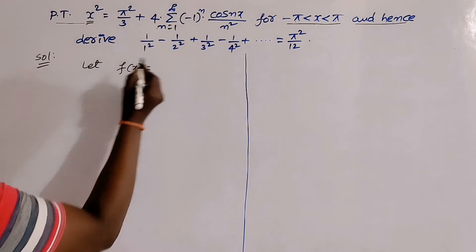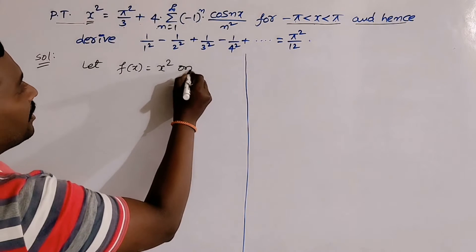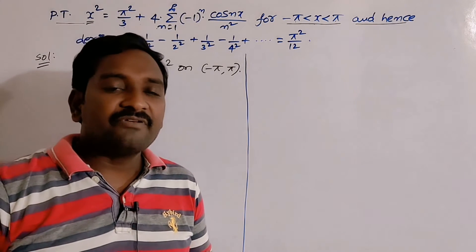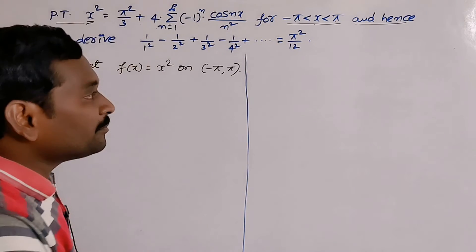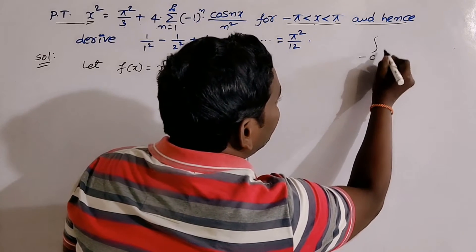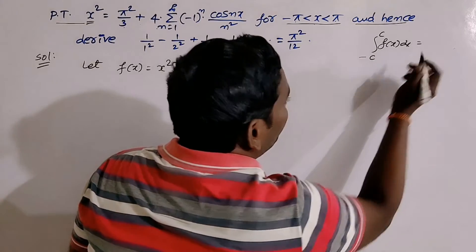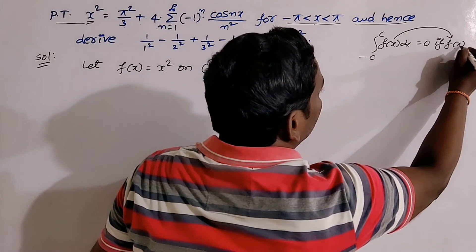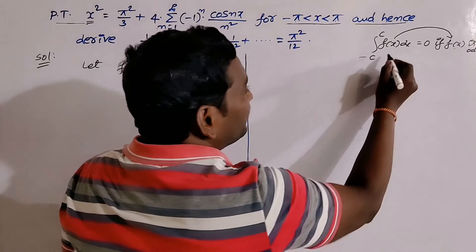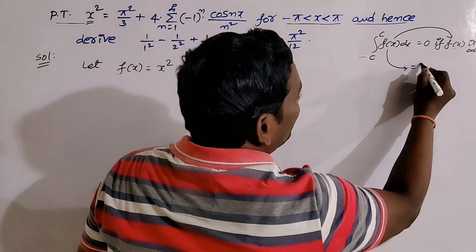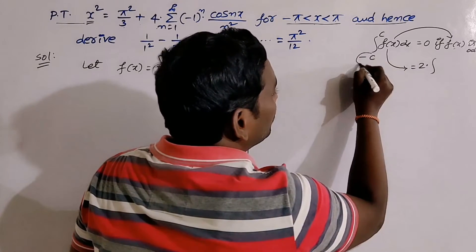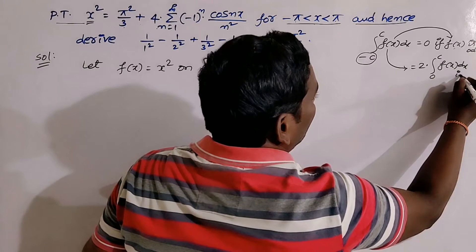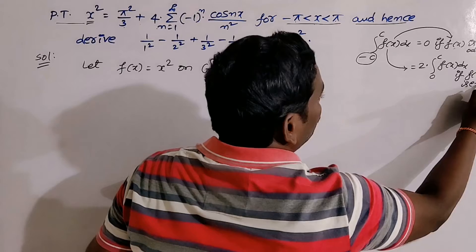Let f(x) = x² defined on the open interval (−π, +π). Whenever the given interval is in the form of (−π, +π), remember this important integration formula: the integral from −c to +c of f(x) dx equals 0 if f(x) is odd. If f(x) is even, write 2 outside and change the lower limit to 0, keeping the upper limit the same.